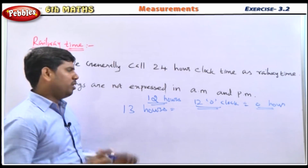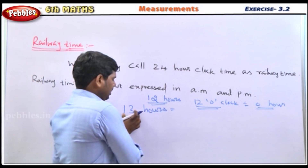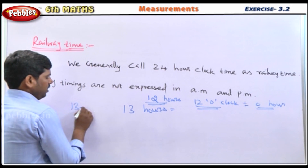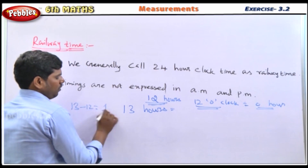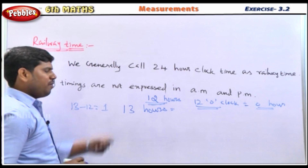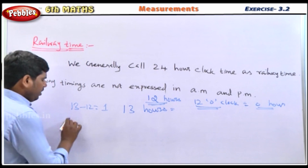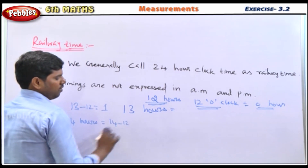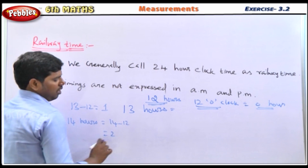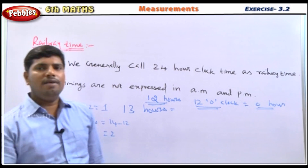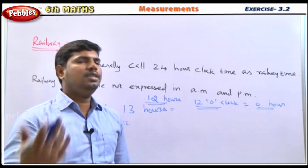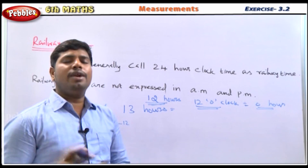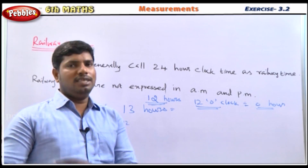Thirteen hours is 1 o'clock. So 13 minus 12 gives 1 — that is 1 o'clock. 14 hours: 14 minus 12 gives 2 — that is 2 o'clock. 15 hours: 15 minus 12 gives 3 — that is 3 o'clock.